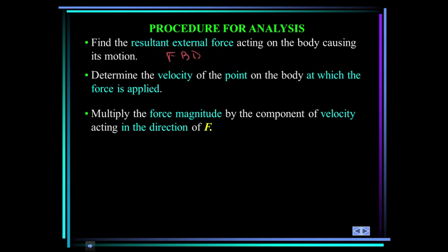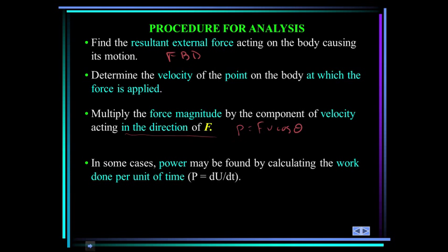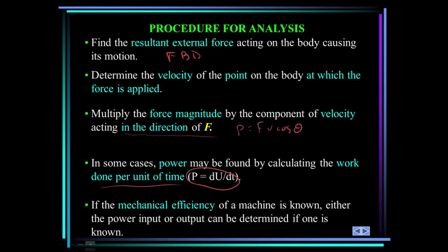Next, multiply the force magnitude by the component of the velocity acting in the direction of F. This will yield the power supplied to the body. In scalar form, power is force times velocity times the cosine of the angle between them. In some cases, power may be found by calculating the work done per unit of time. If the mechanical efficiency of a machine is known, either the power input or output can be determined if one of these is known.